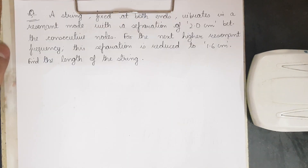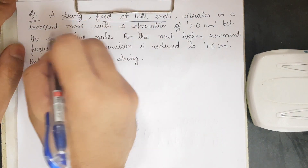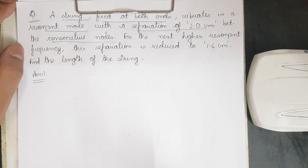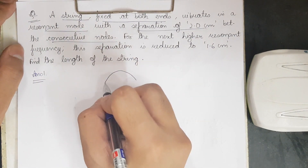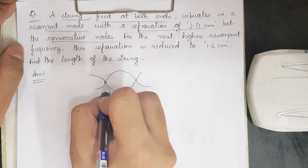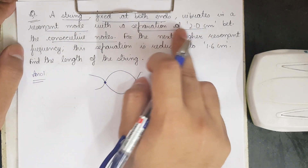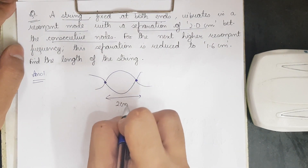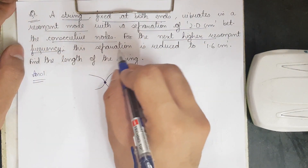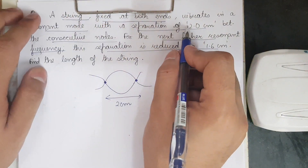Now let us begin with the first question. We have a string fixed at both ends, vibrating in a resonant mode with a separation of 2 cm between consecutive nodes. Nodes are the points where the amplitude becomes zero. The separation between two consecutive nodes is given as 2 cm. For the next higher resonant frequency, this separation is reduced to 1.6 cm.